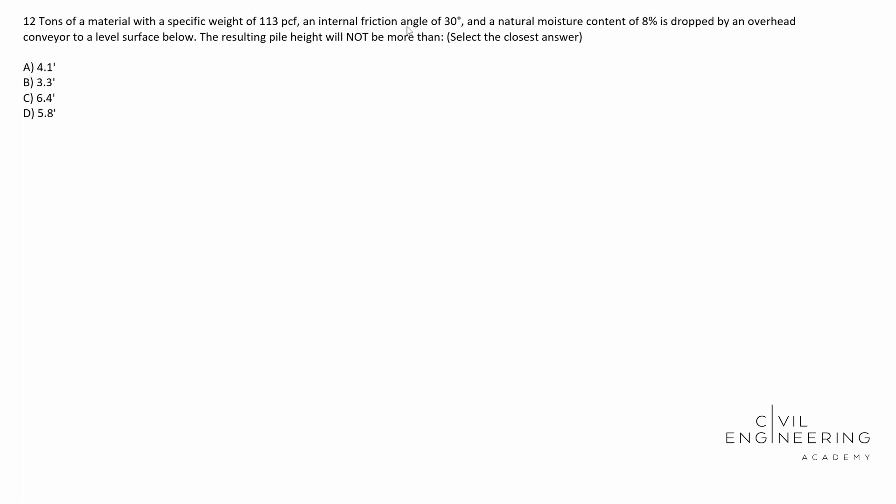12 tons of a material with a specific weight of 113 pounds per cubic foot, an internal friction angle of 30 degrees, and a natural moisture content of 8% is dropped by an overhead conveyor to a level surface below. The resulting pile height will not be more than, select the closest answer.